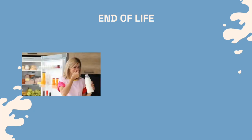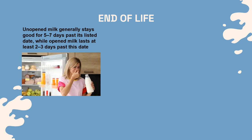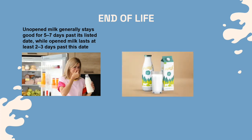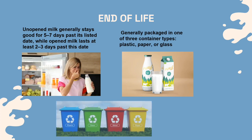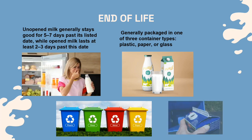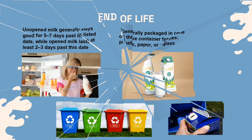As for the end-of-life stage, unopened milk generally stays good for 5 to 7 days past its listed date, while opened milk lasts at least 2 to 3 days past this date. Fresh milk is generally packaged in one of three container types: plastic, paper, or glass. All of these types of packaging are recyclable and some of them are biodegradable.